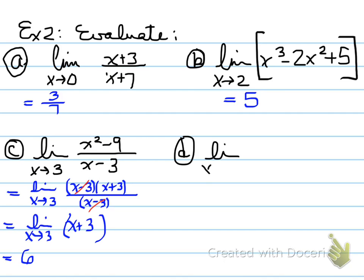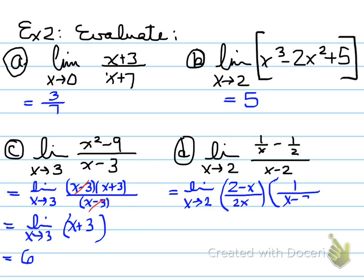Next one. Find the limit as x approaches two of one over x minus one over two over x minus two. So what do we do here? Well, we know that this plugged in here will give us zero. We've got a fraction over a fraction. What I would work with is one fraction at a time. Limit as x approaches two of two minus x over two x. That would be your numerator with a common denominator. And the denominator turns out to be one over x minus two.